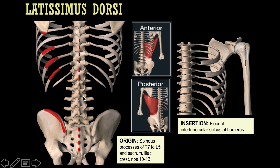Latissimus dorsi is also a fairly wide-spanning muscle, essentially about half the size of the trapezius diamond. Its origins, in red, are the spinous processes of the sacrum and T7 down to L5, anchoring also onto the iliac crest and ribs 10 through 12 — occupying most of that posterior space. Its only insertion is the intertubercular sulcus of the humerus, just distal to the neck of the humerus, which is why its main function is to adduct, extend, and medially rotate the humerus.